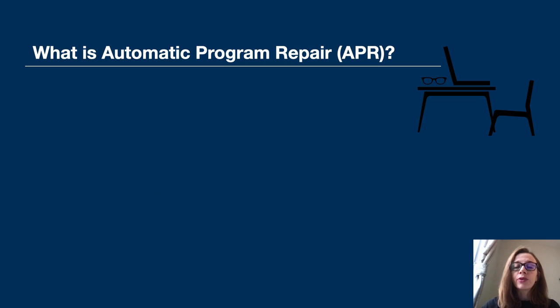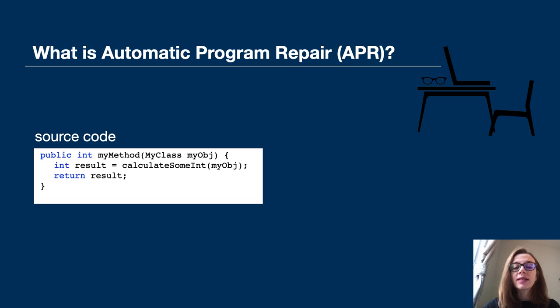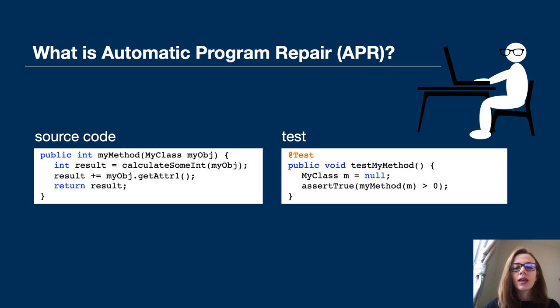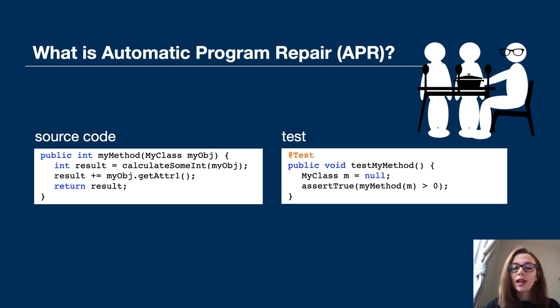Imagine you have some source code, for example in Java, and a passing test that invokes your method. Then you decide to change the method and the way you calculate the result. When you're done changing your code, you commit and push the changes and go for lunch.